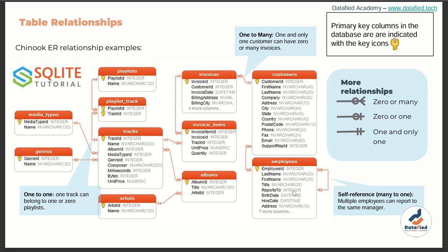Those are the various types of relationships we have in SQL. Please review this material again and ensure you understand everything that has been said. For each table, the primary keys are indicated by a yellow key icon. I'll see you in the next video where we will learn how to create a relational database in MySQL Workbench. Thank you for watching — goodbye!